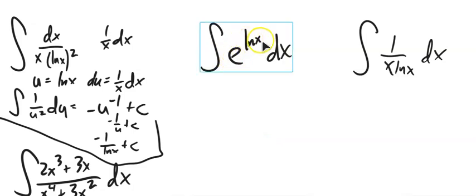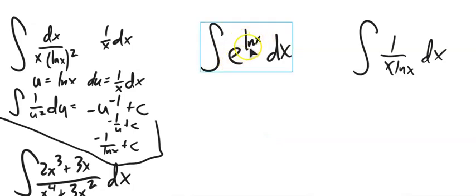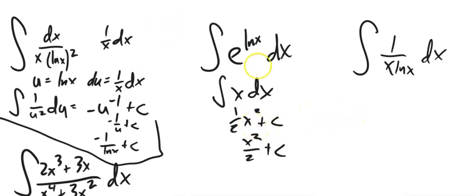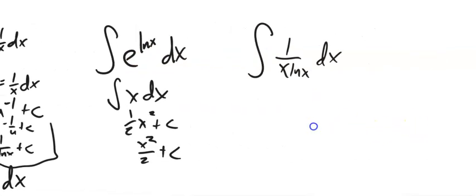The integral of e^(ln x): e and natural log undo each other, so e^(ln x) is simply x. The integral of x is one-half x² plus C. That was convenient — e and natural log cancel each other out.